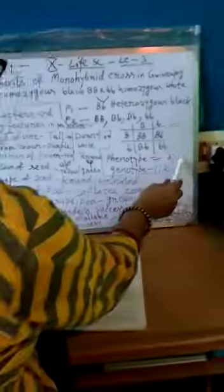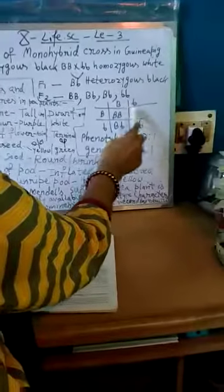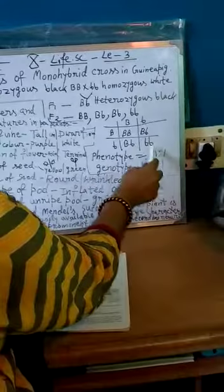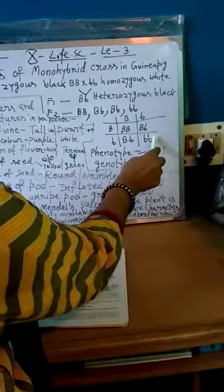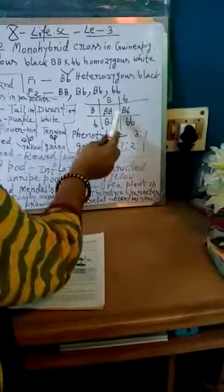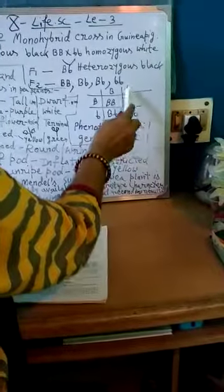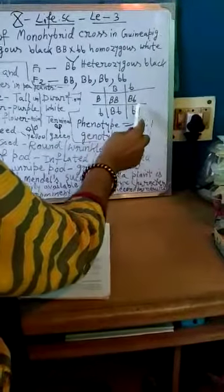Capital B is dominant and b is recessive, so hybrid expresses capital B character as hybrid black. And small b small b is pure white. So phenotype ratio is 3 is to 1. Three black characters expressed and one white character expressed, so 3:1. The genotype ratio is 1 is to 2 is to 1. One pure black, two hybrid black, and one pure white. This is 1:2:1. This is the process of monohybrid cross in guinea pig.